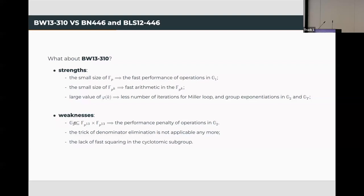On the negative side, since the group G2 is defined over the full extension field, operations in G2 are slow. In addition, due to the odd BW13 degree, the trick of denominator elimination is not applicable anymore. Finally, on this curve there is no faster squaring in the second cyclotomic subgroup.